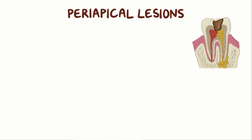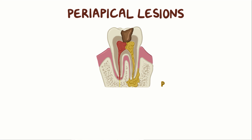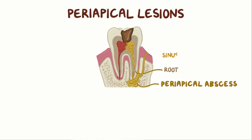The accumulation of pus is called a periapical abscess, as it surrounds the root. This abscess can eventually form a sinus tract, which is a narrow passageway that extends from the abscess to the mouth, through which the pus can drain out.